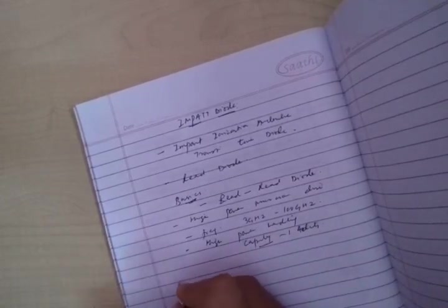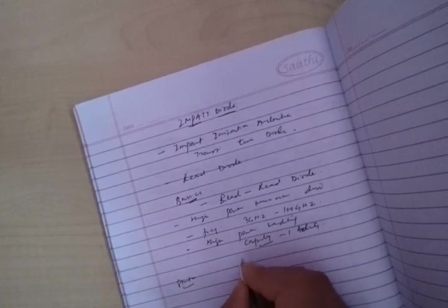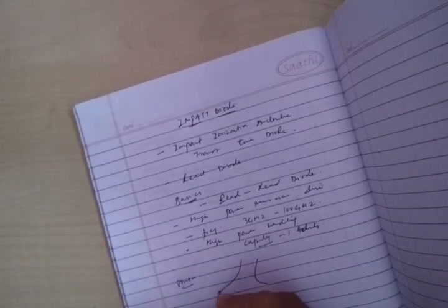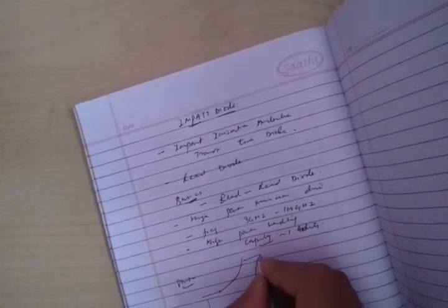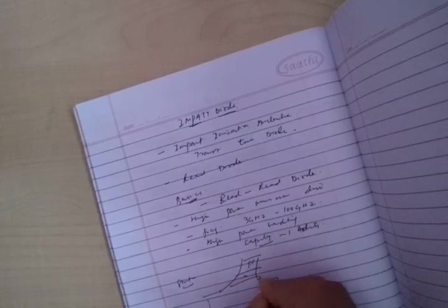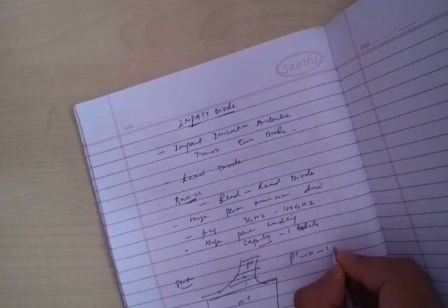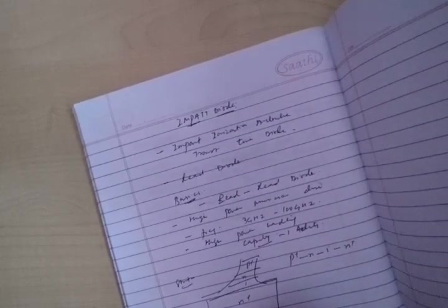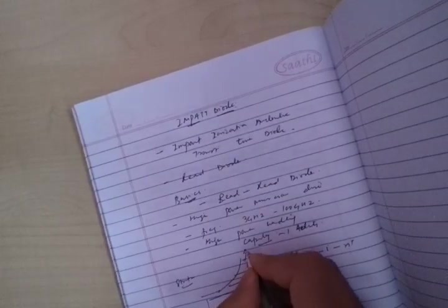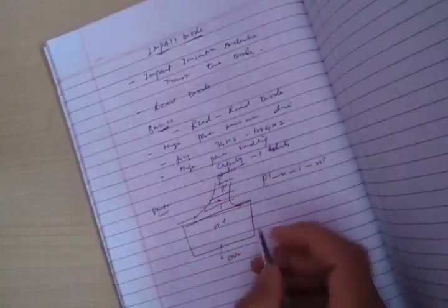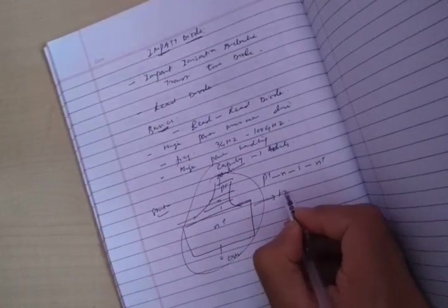Now we are going to learn about the structure. Its structure is like this: P+ N I and N+. P is highly doped, then N layer, then I intrinsic, and then N+. This one is cathode and this one is anode. Because of this vertical structure, it has high power handling capacity.